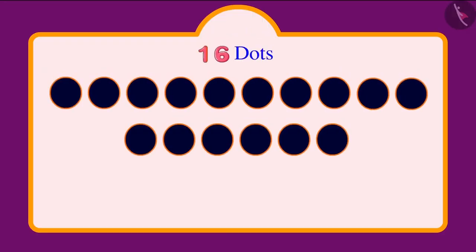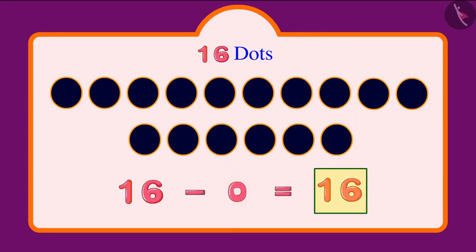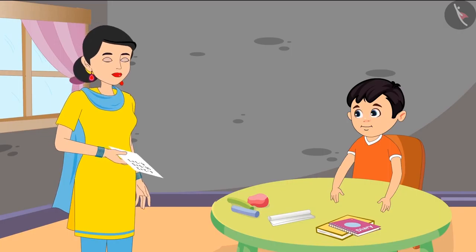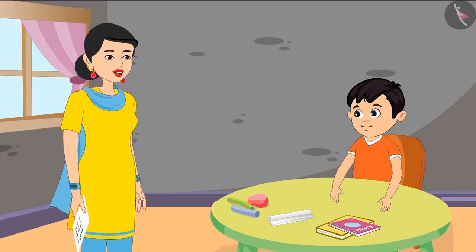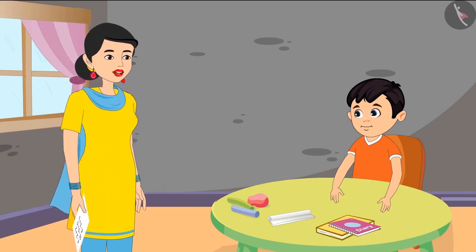See this — there are 16 dots. Now out of these, we have to subtract 0 dots. Now tell me, what does 0 mean? Not even 1. So when we did not subtract even 1 of the 16 dots, then how many dots are left with us? 16 dots, mommy. Yes, Chotu, you are right — 16 dots. So this means, Chotu, if we subtract 0 from any number, or if we subtract nothing from that number, then we get the same number.